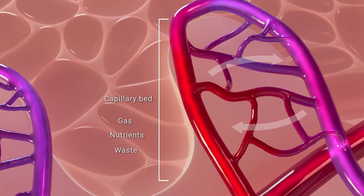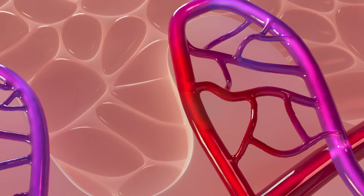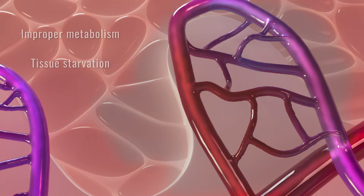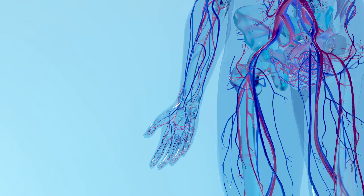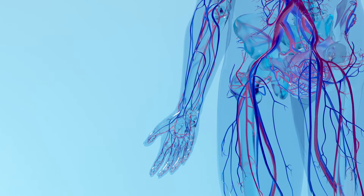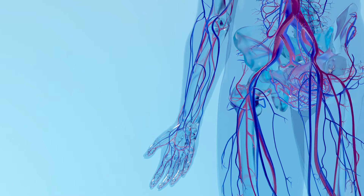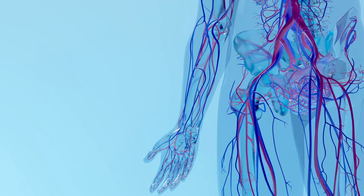If blood is shunted away from the capillaries, the tissue around this capillary bed will be depleted of blood and oxygen, resulting in improper metabolism and tissue starvation. Most measures of tissue health used in wound management today assess perfusion and oxygenation in the macrovascular network only.